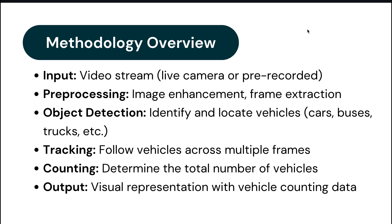The third step is object detection — identifying and locating vehicles such as cars and buses. Once image pre-processing is done, object detection begins. Different models identify cars, buses, and trucks using different boundary boxes. An object detection model plays a crucial role in identifying and locating vehicles within each frame. Various algorithms available in the market can be used, and this is the most important coding step, especially for the algorithm part.